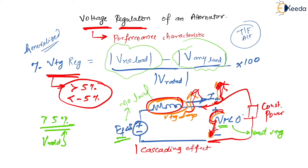This cascading effect occurs in alternators, transmission lines, and transformers. Because of it, voltage regulation must always be confined to plus or minus five percent. If it is more than five percent or less than minus five percent, such problems can arise.